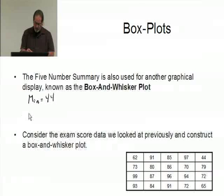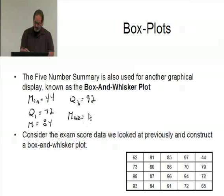The first quartile is 72. The median is 84. The third quartile is 92. And the maximum is 99.